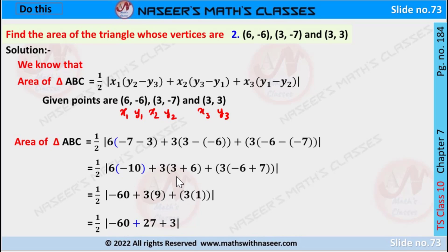After simplifying: 3 plus 6 gives 9, and -6 plus 7 gives 1. So 6 into -10 is written as -60, 3 into 9 is written as 27, and 3 into 1 is written as 3.